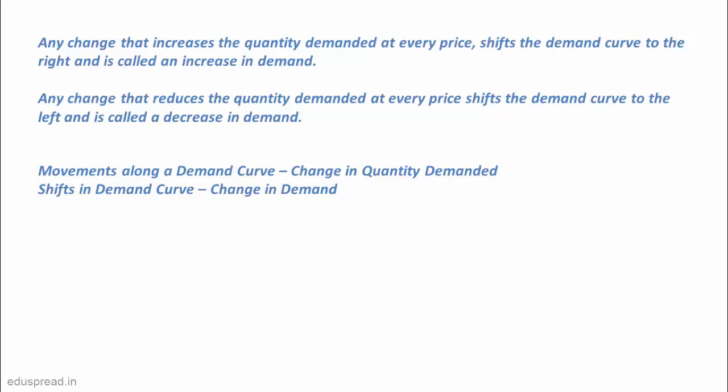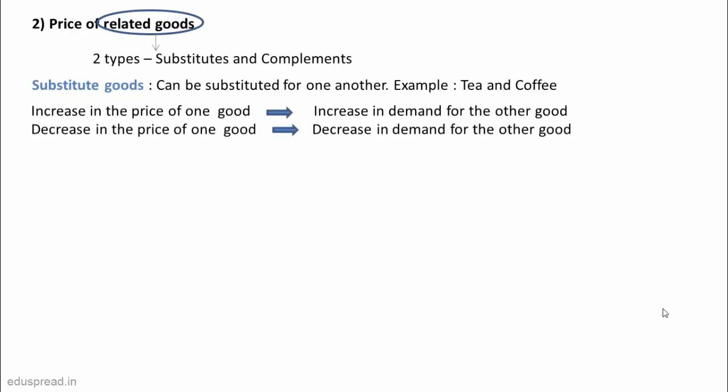When the other factors change, the entire demand curve shifts. The second factor affecting demand behavior is the price of related goods. There are two types of related goods: substitutes and complements. Substitute goods are those which can be substituted for each other, such as tea and coffee. If your office cafeteria is out of coffee, you can manage with tea as both are refreshing hot drinks.